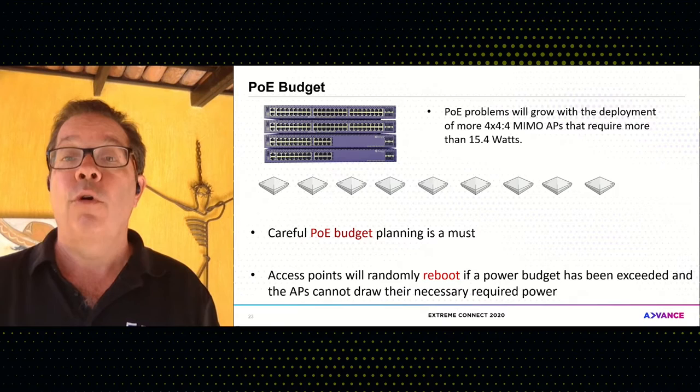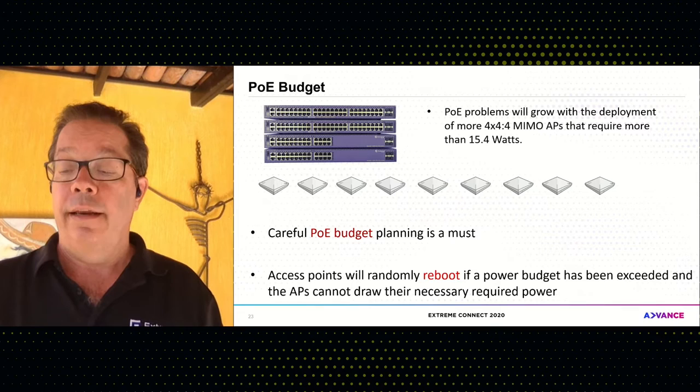Another useful PoE trick: if you have an AP that is locked up for any reason, from Xtreme Cloud IQ you can power cycle the switch port. The switch might be in Illinois while you're based in Mexico — you log into your cloud account, go to that switch port where the AP is plugged in, and just power cycle it to force a reboot. It's a troubleshooting trick everybody should take advantage of, and the power of the cloud makes it even easier. PoE problems are going to grow as more APs have more radios — 4x4x4 and tri-band.